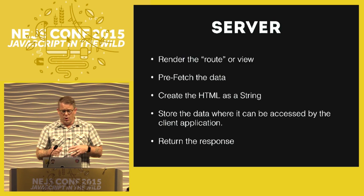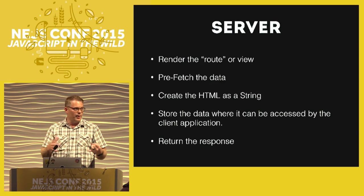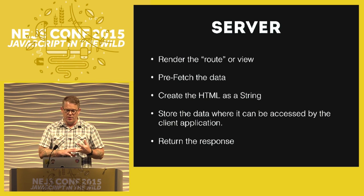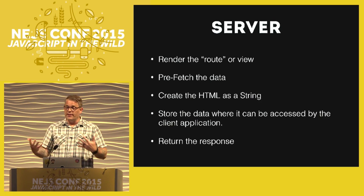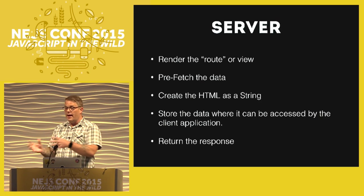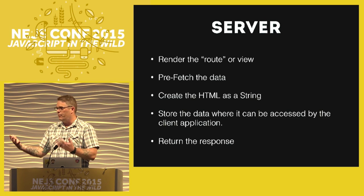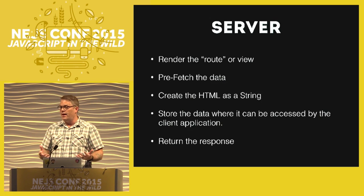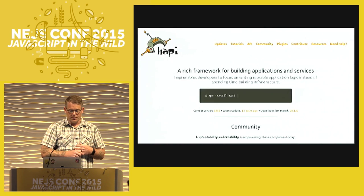Let's handle the server first. On the server we want to do five things: render the route or view - figure out where we are in the application; prefetch all the data; create the HTML and store it as a string; store the data where it can be accessed by our client application once it's pre-rendered, because it's a stateless application - if the client gets the index.html and fires the React app, it won't know about the pre-rendered data and will say the data is null and go fetch it again, which completely undoes all the advantages; and then return the response with index.html.